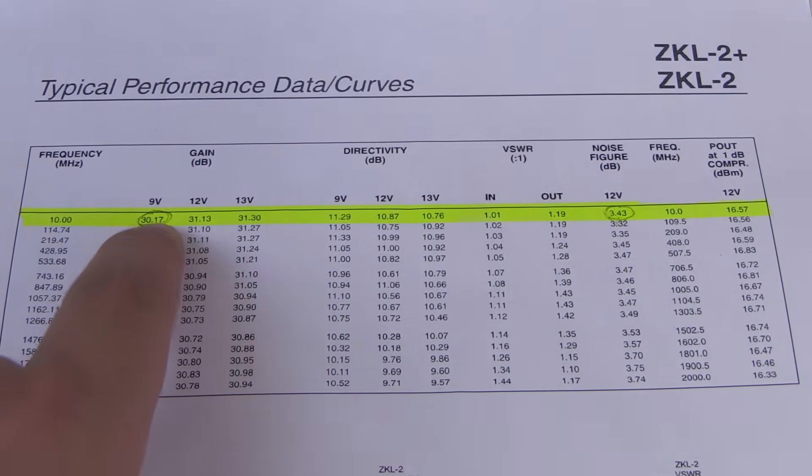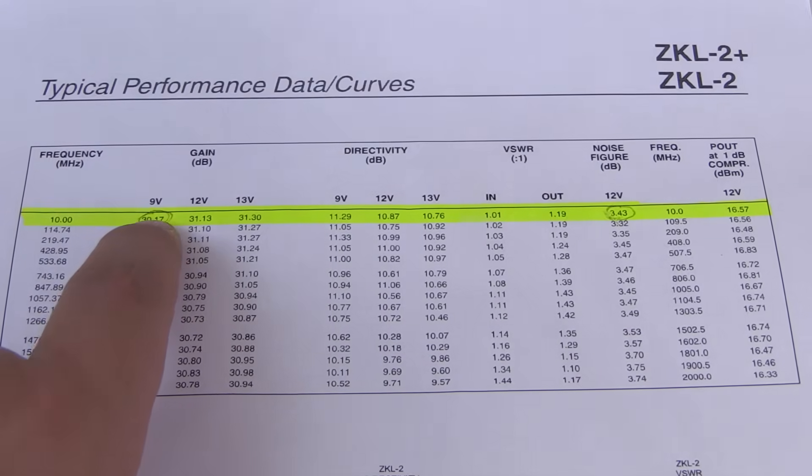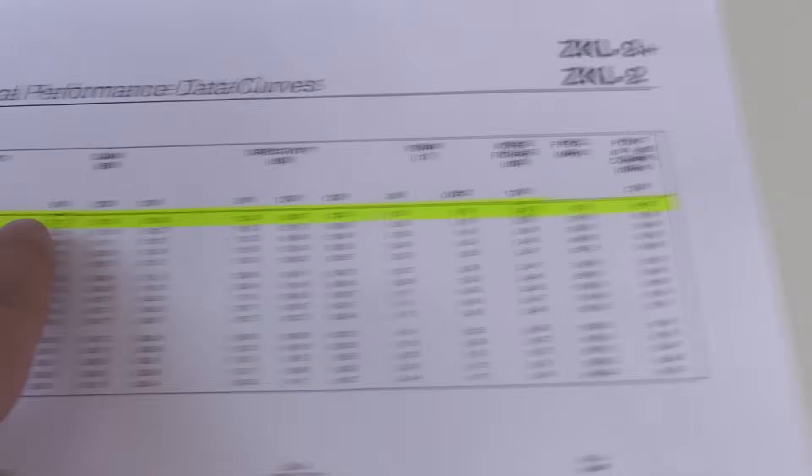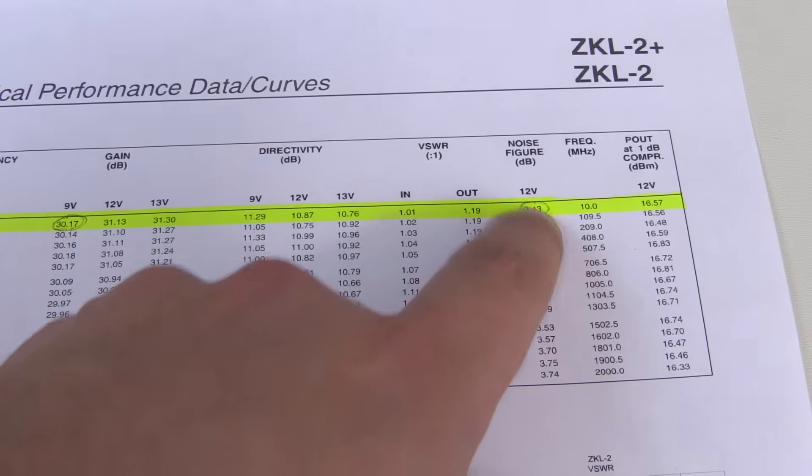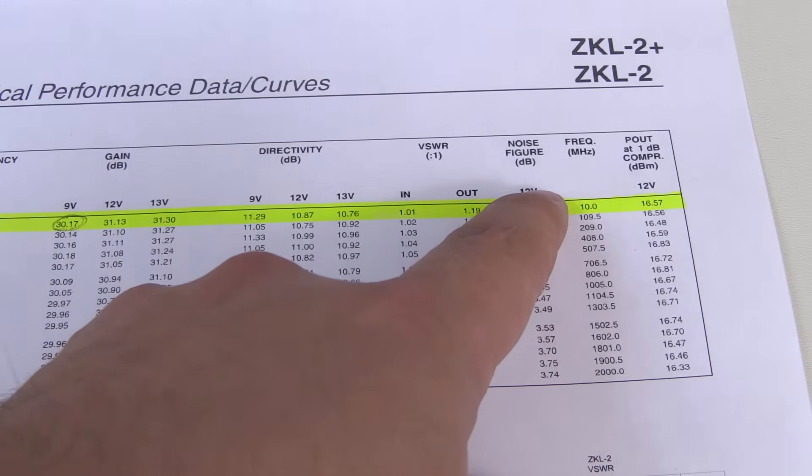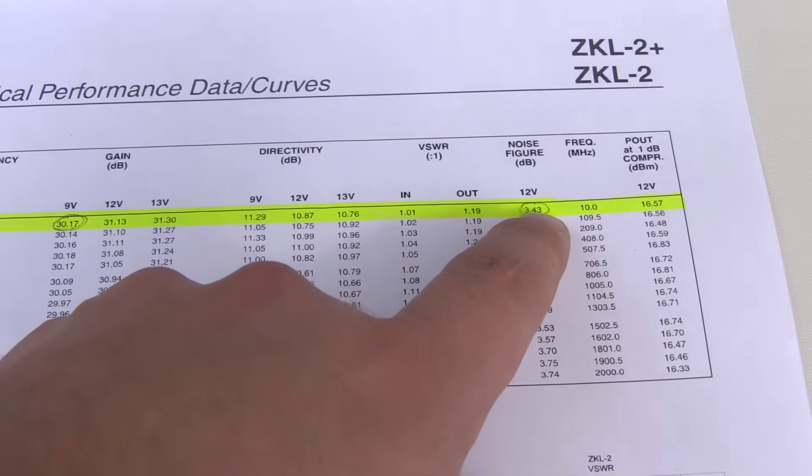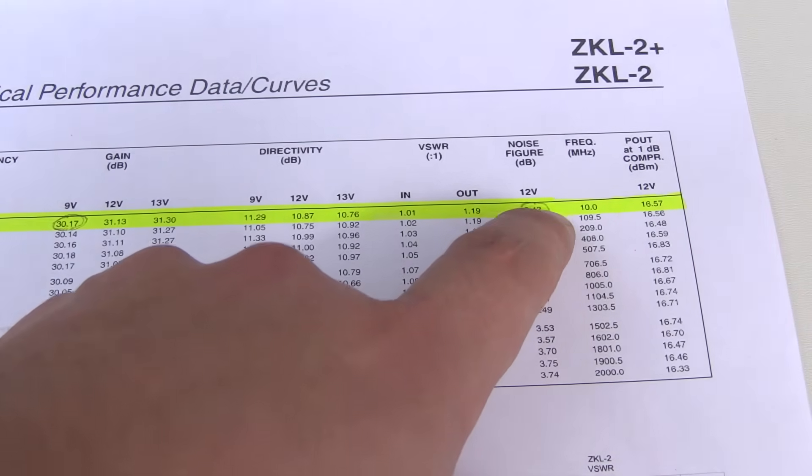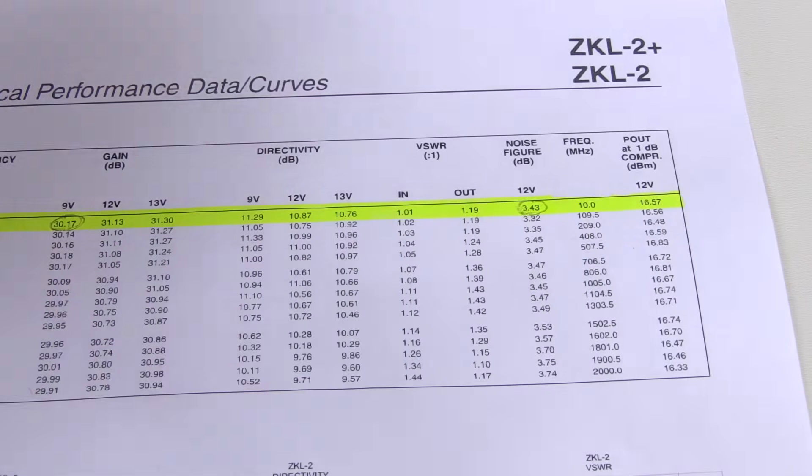Now I selected 9V supply voltage, so we see the gain is 30.17 dB, so we expect the output noise to be at least this much above thermal noise. And then MiniCircuit gives us a noise figure over here, but that one's measured at 12V. Regardless, the noise figure is 3.43 dB as given. Of course, MiniCircuits could write whatever number they want in here, so let's check.